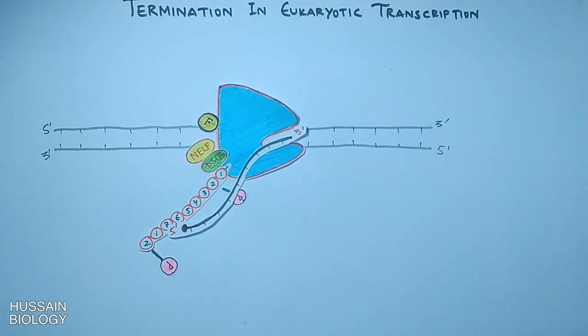Now in the next step we need to bring the cleavage and polyadenylation factors to the complex. We see when the poly-A signal is transcribed on mRNA molecule as a sequence of AAUAAA, it's a kind of termination signal.